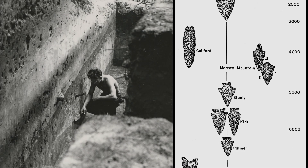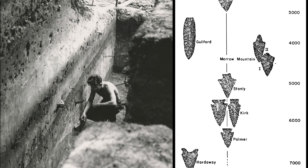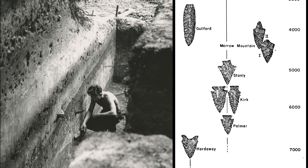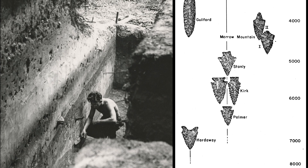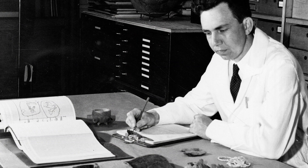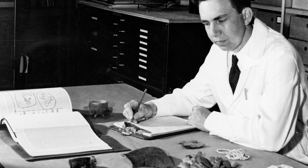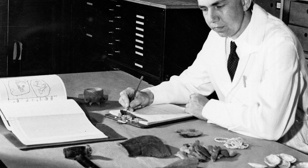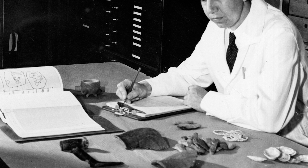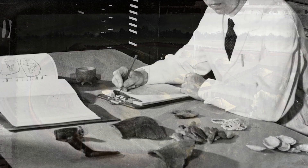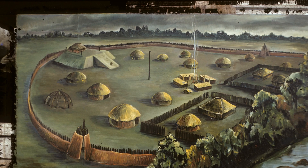Coe's research enabled him to distinguish between different periods of Native occupation, separated in some cases by thousands of years. Near the end of his life, Coe said it was careful methodology that allowed archaeologists to see prehistoric cultures as more than just a jumbled pile of arrowheads. Prior to that understanding, he said, it was just "Indians and us."